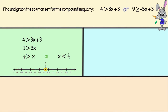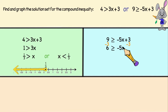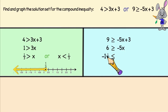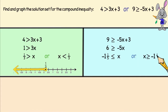Again we're going to graph this. Next up is 9 is greater than or equal to negative 5x plus 3. We'll need to add negative 3 to both sides of the inequality, giving us 6 is greater than or equal to negative 5x. Then we'll divide each side by negative 5. Remember, when we're dividing an inequality by a negative number we need to flip the inequality sign, so greater than or equal becomes less than or equal. So now we have negative 1 and 1 fifth is less than or equal to x, or we could write that as x is greater than or equal to negative 1 and 1 fifth. Let's graph that.